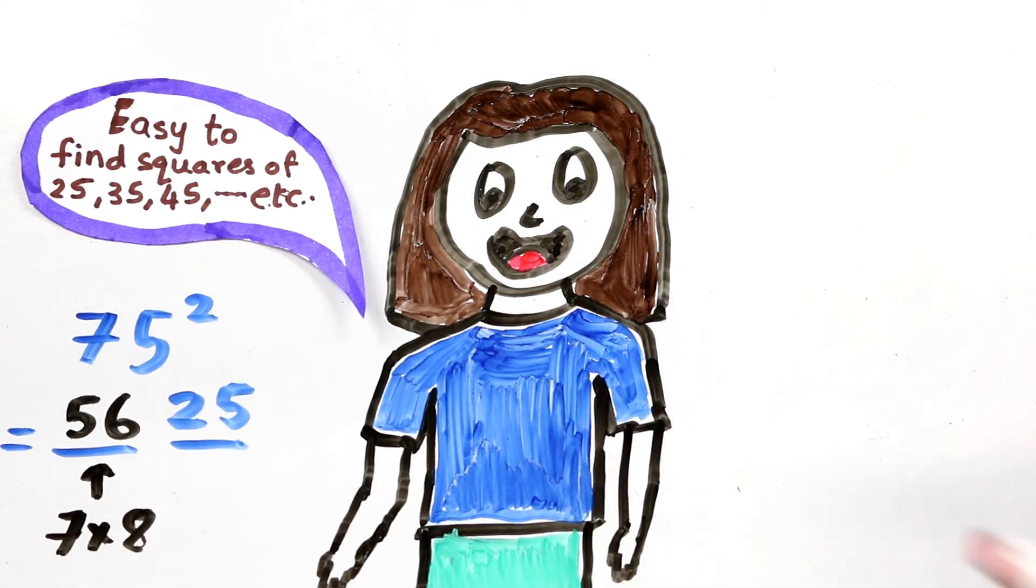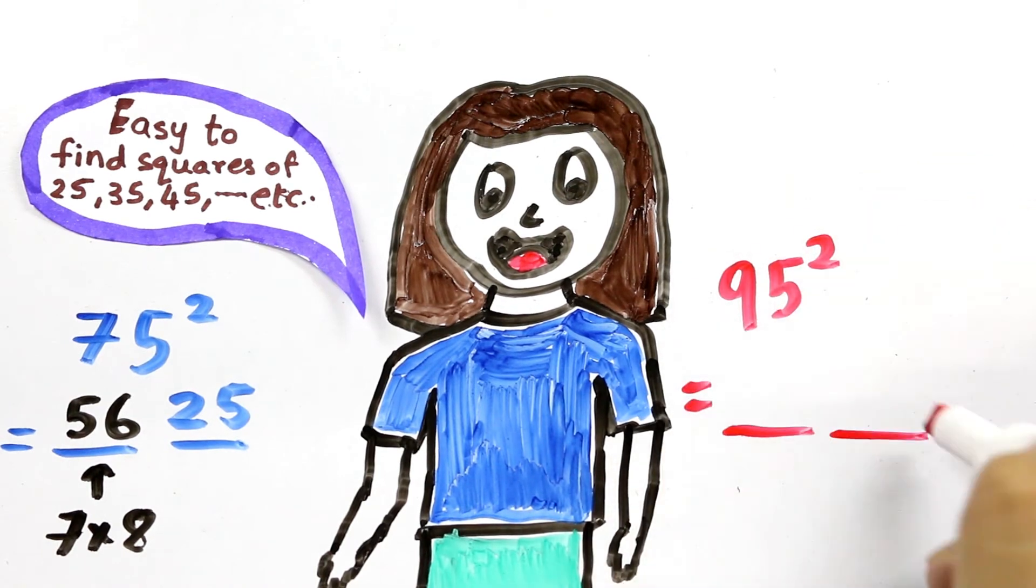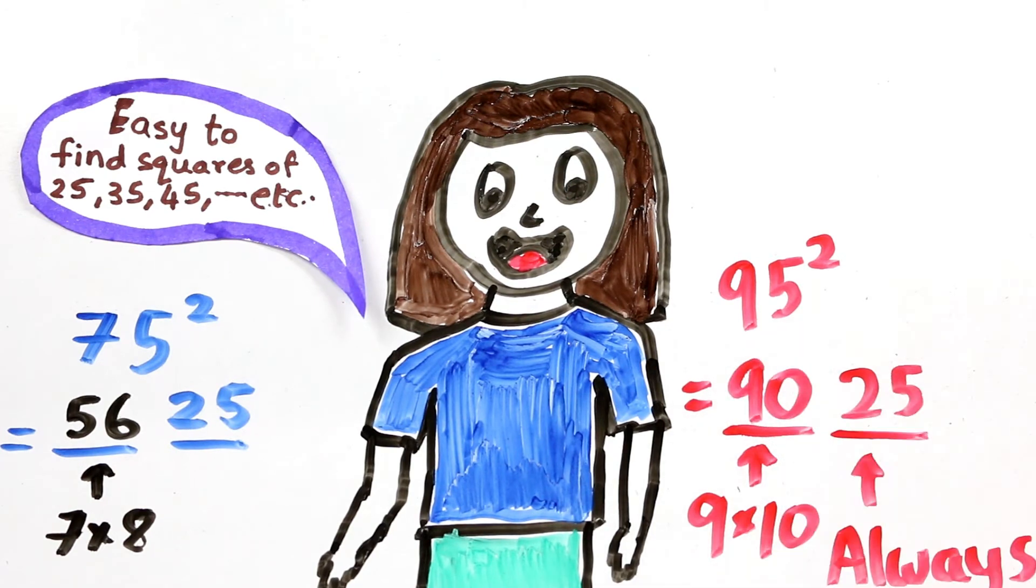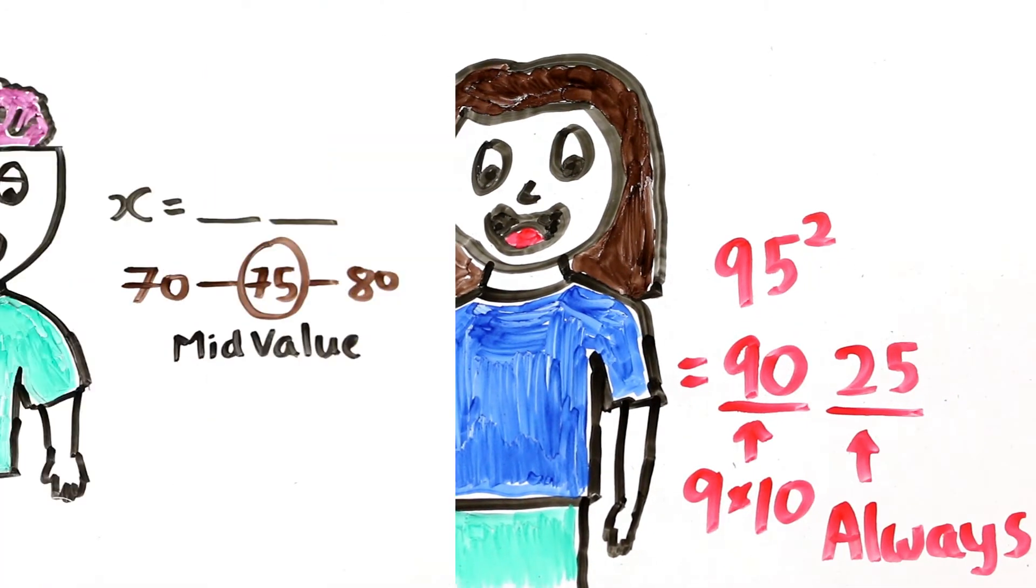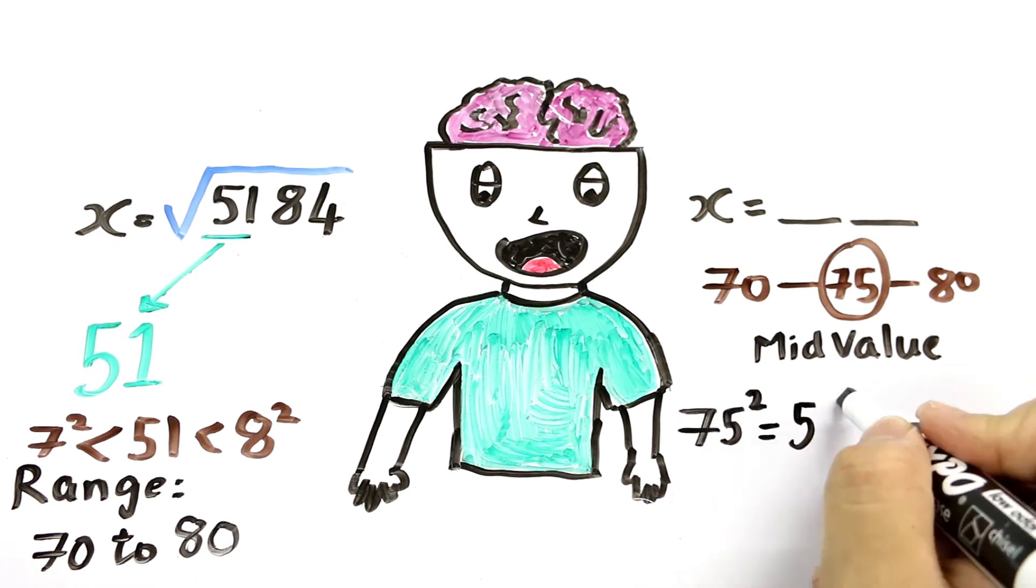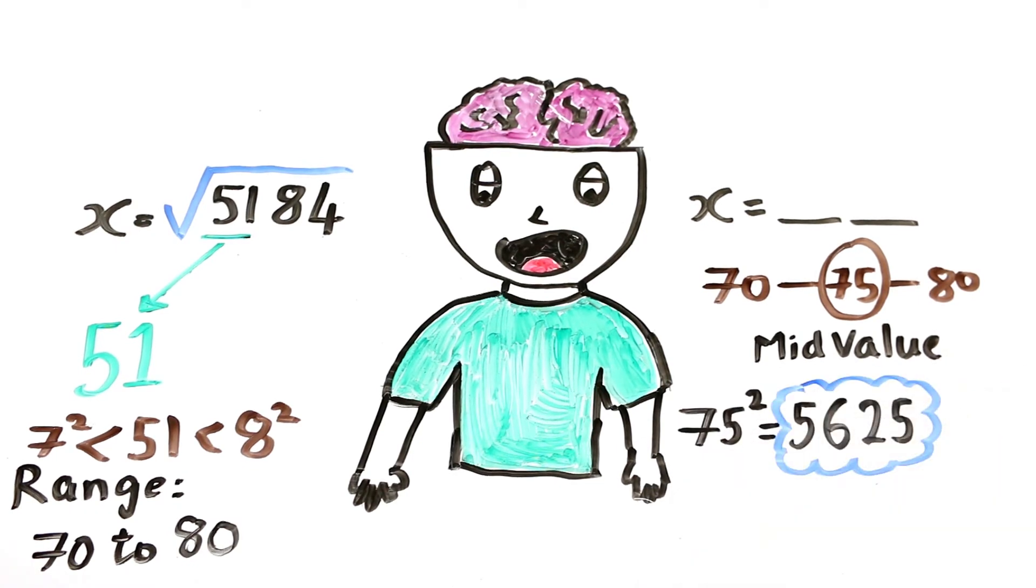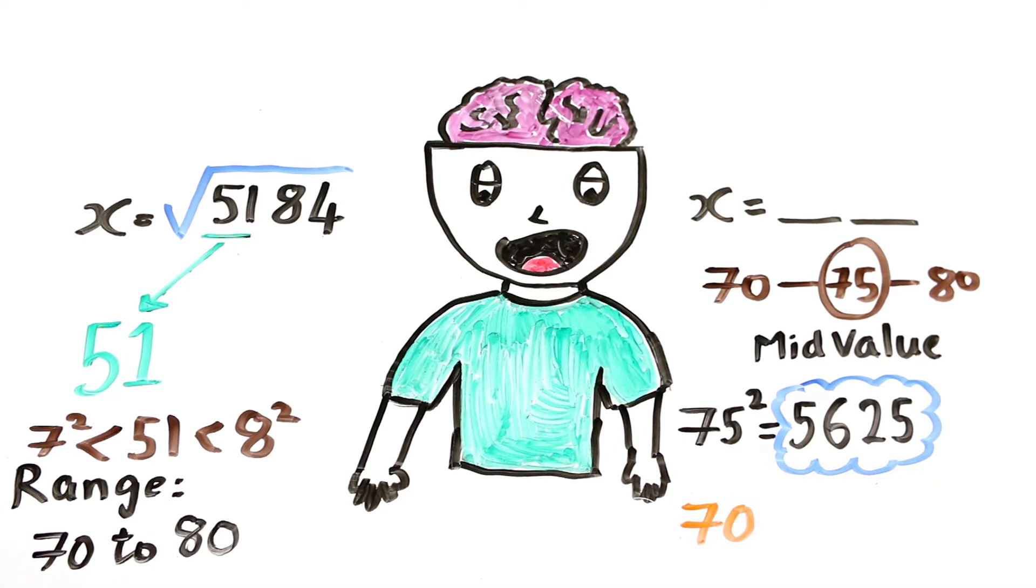This trick works for every multiple of 5 when you want to find the square of it. So if it was 95, then it would be 90 and then 25. So the square of 95 is 9025. 75 square is 5625, which is greater than 5184. So this indicates that our number is between 70 to 75.